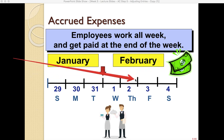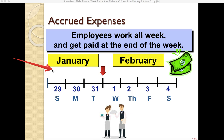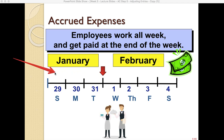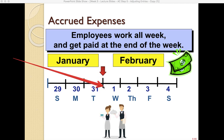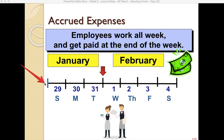It really helps to use a timeline. Let's say this week is the last week of January and the first week of February, and employees always get paid on Saturday. The employees worked Sunday through Saturday, but because of how the calendar fell, Sunday, Monday, and Tuesday are in January and the rest of the week is in February. Some work is being done in the previous period but cash is paid in the next period.